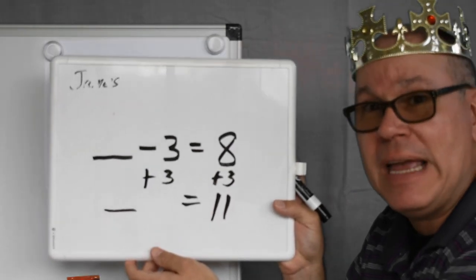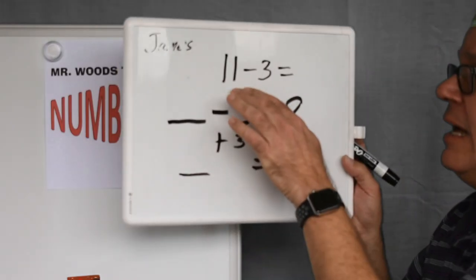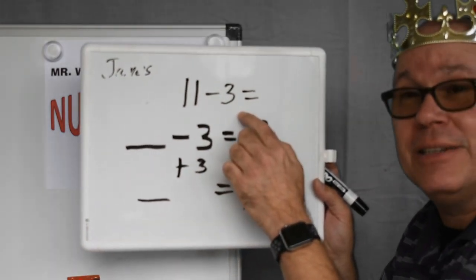So we started out with eleven pages. Let's double check. Eleven minus three is equal to eight. Correct.